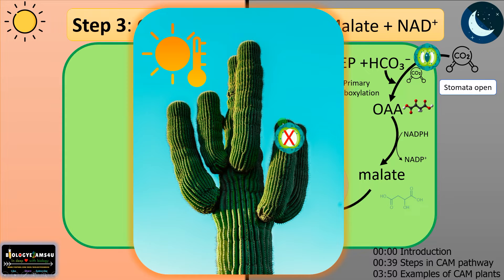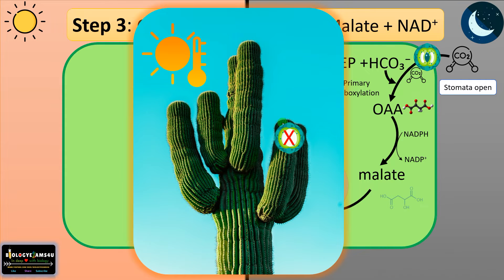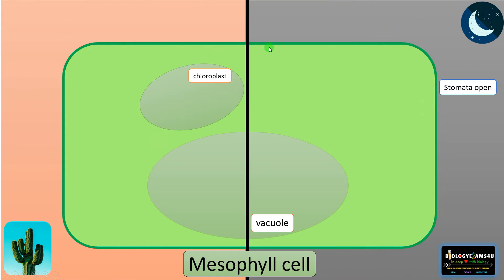These amazing plants evolved an extraordinary pathway called the CAM pathway. For easy understanding, we have divided this entire pathway into simple steps. Let's begin.